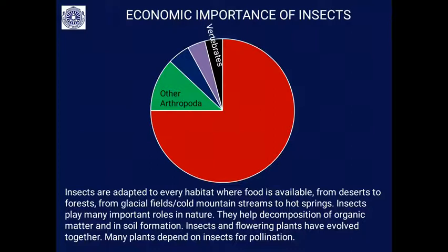Insects are adapted to every habitat where food is available — from desert to forest, from glacial fields and cold mountain streams to hot springs. Insects are everywhere and they play many important roles in nature.